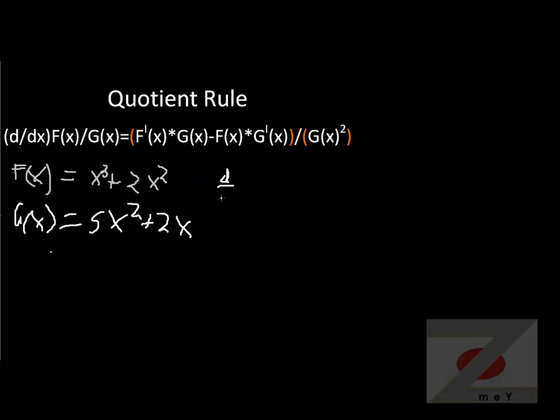d/dx is going to be very similar. Once again, we have derivative of the first one times the second. Derivative of the first is 3x squared plus 4x, times the second which is 5x squared plus 2x.